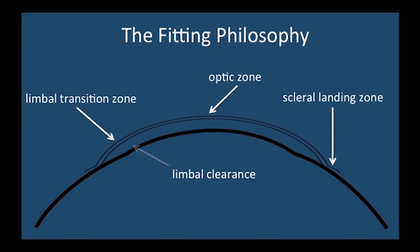It makes it critical to understand the importance of lens clearance at the limbus, as this portion of the cornea contains all the limbal stem cells which will repopulate the rest of the cornea.